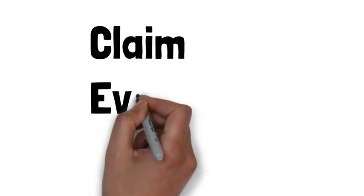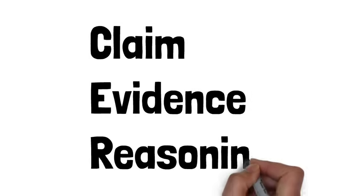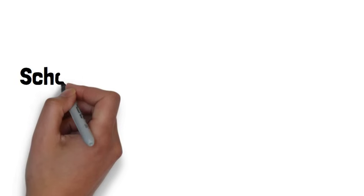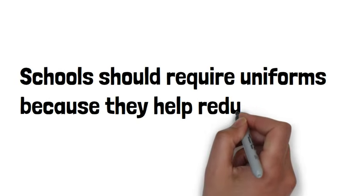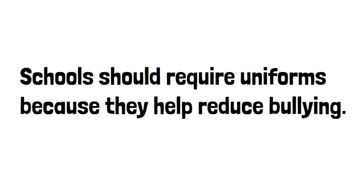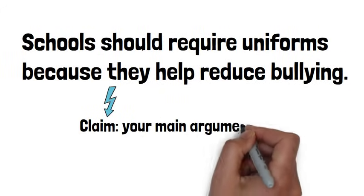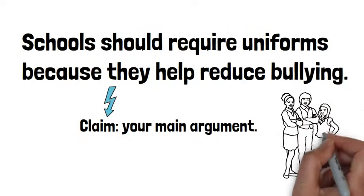Here is an example paragraph that follows the structure of Claim, Evidence, and Reasoning, or CER. Schools should require uniforms because they help reduce bullying. This statement is your claim. It is the main argument or idea you are attempting to prove or convey.